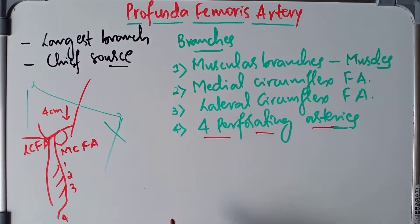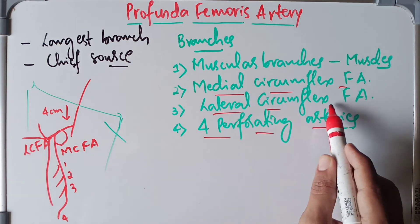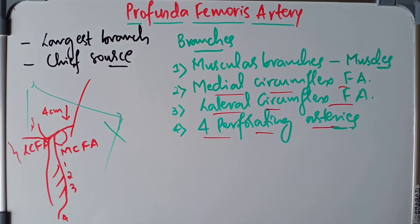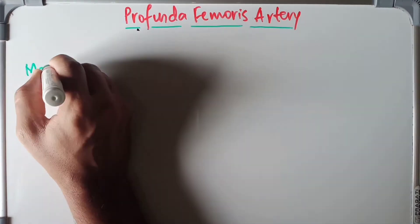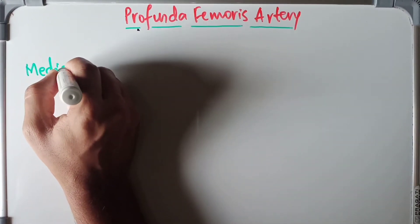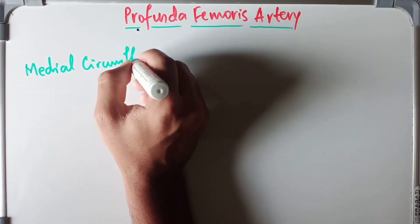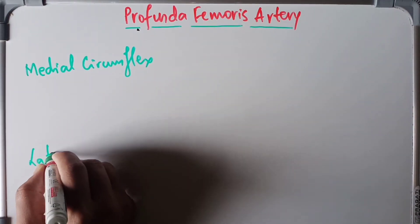Now we will go into detail about the medial circumflex femoral artery as well as the lateral circumflex femoral artery — their divisions and where they supply. We are left with two more discussions: one is the medial circumflex femoral artery and then we have the lateral circumflex femoral artery.